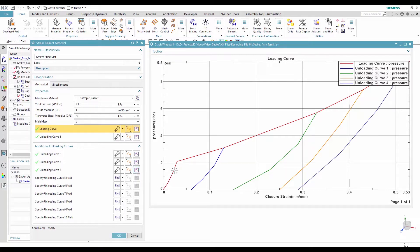You can see that the loading curve is elastic up to 2.1 kPa. This pressure must also be specified in the yield pressure box. After this pressure, the gasket will plastify. If the load is removed, the gasket strain will follow one of the unloading curves or an interpolation of two unloading curves.